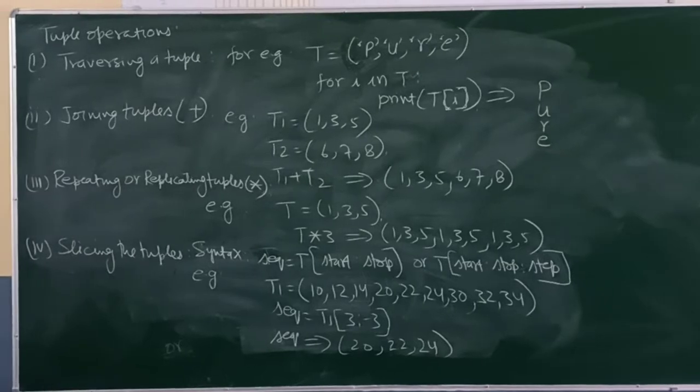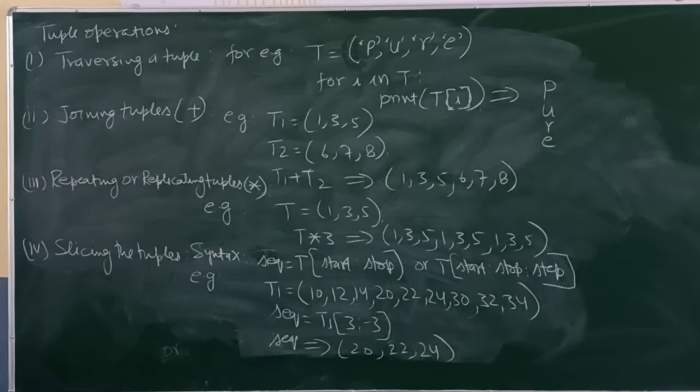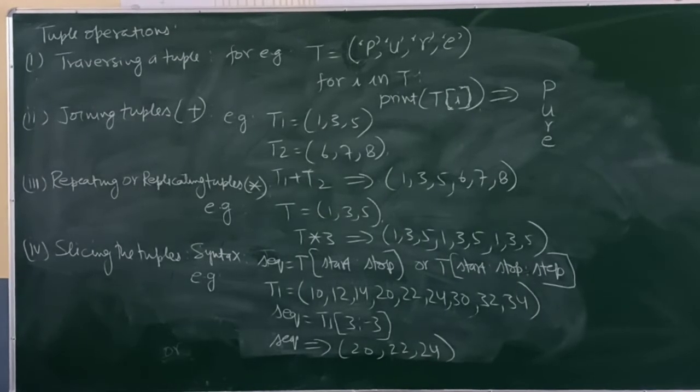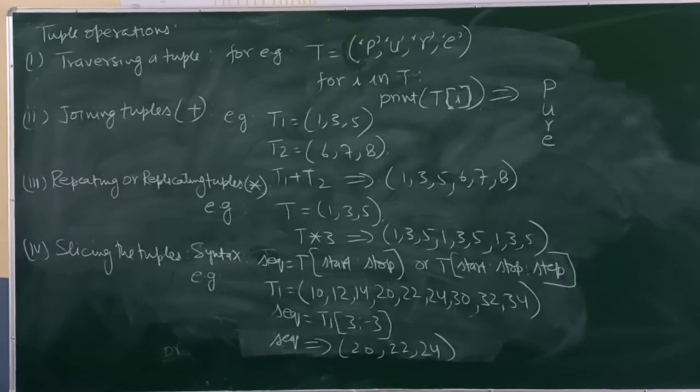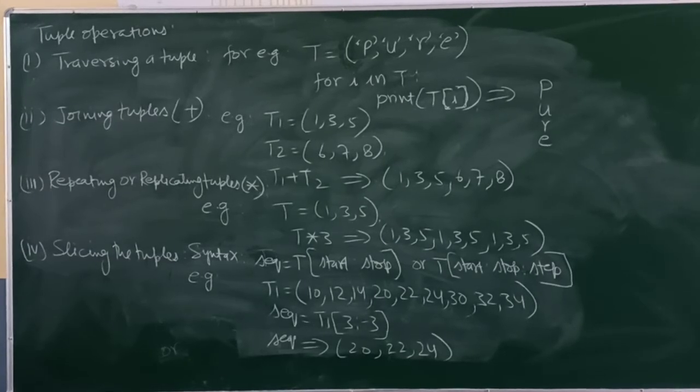T1 equals 1,3,5. T2 equals 6,7,8. If we write T1 plus T2, then it will print 1,3,5,6,7,8. Another is repeating or replicating tuples.